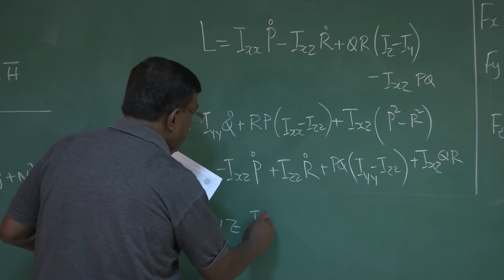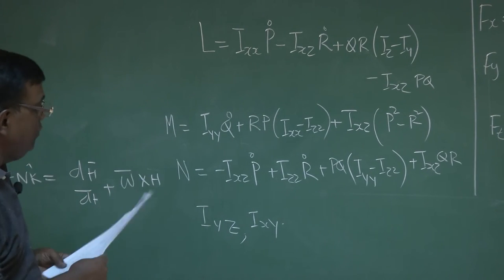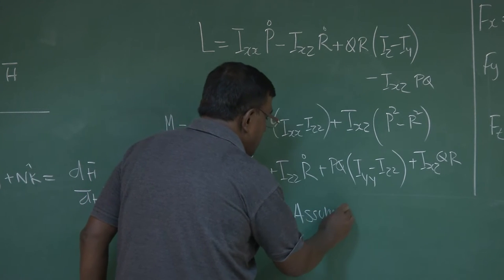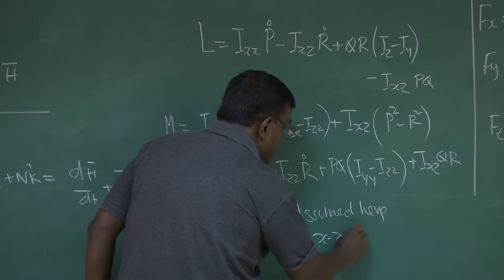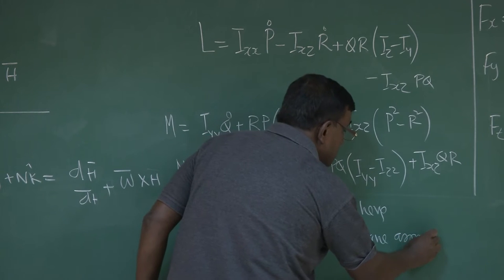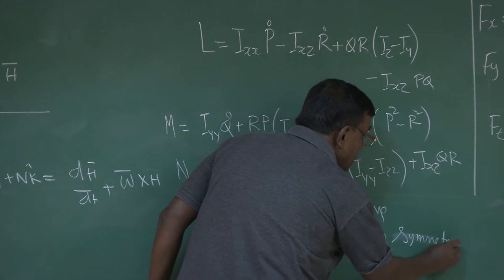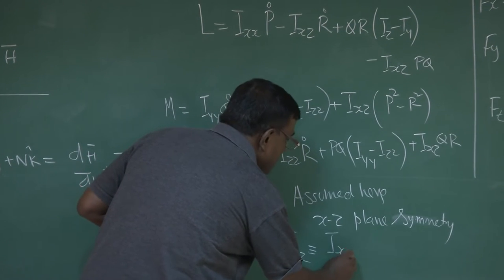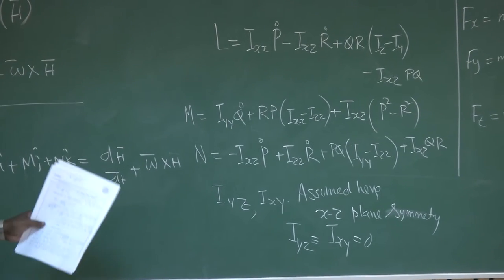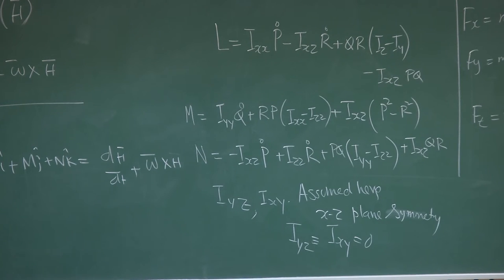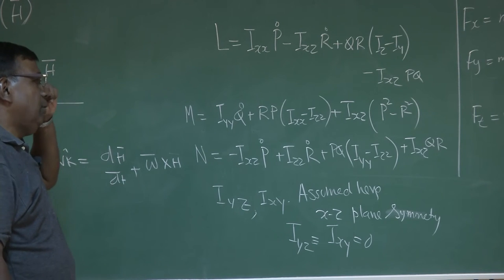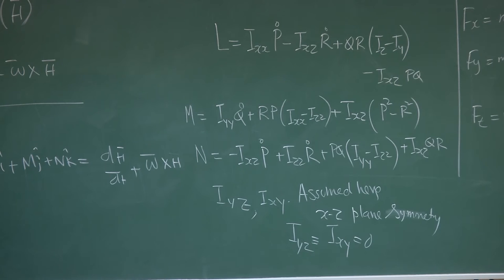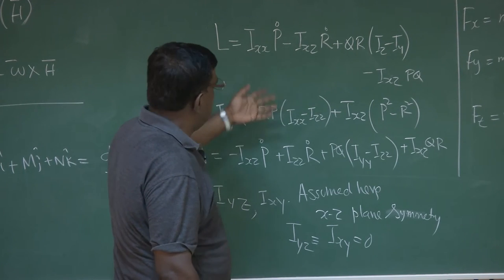Notice that Iyz and Ixy terms vary. We have assumed x-z as the plane of symmetry — which is not a bad assumption. By definition, for a plane of symmetry, Iyz and Ixy are equal to zero. So those terms do not appear in this expression. What we have obtained: expressions for fx, fy, fz in terms of motion variables u-dot, q, r, w, etc., and the moment equations in terms of p-dot, r-dot, etc.